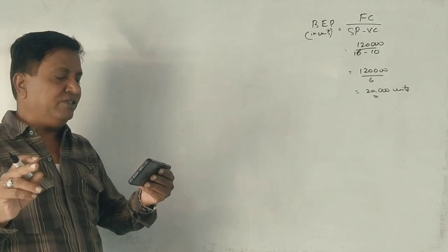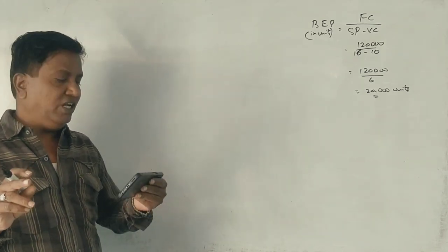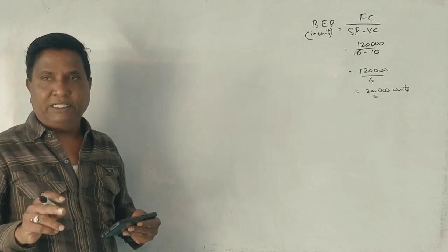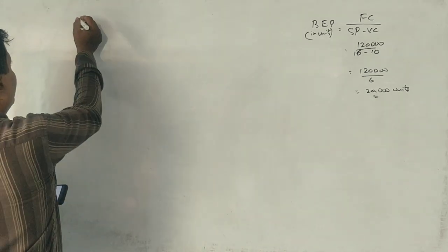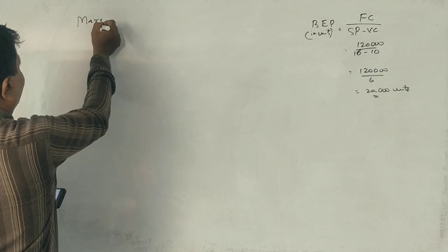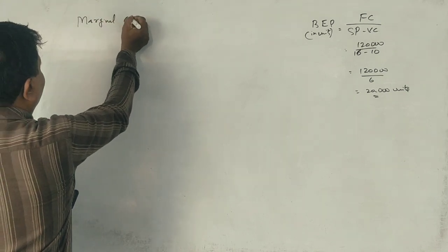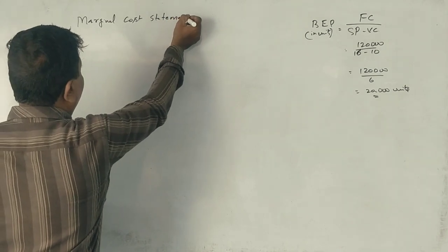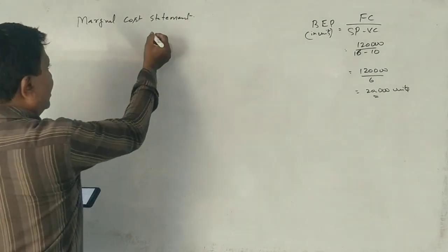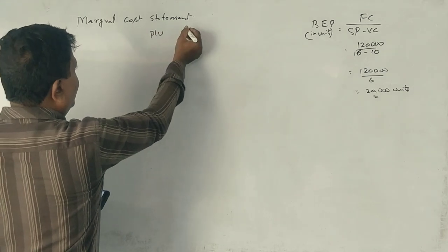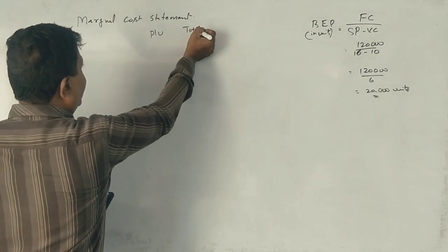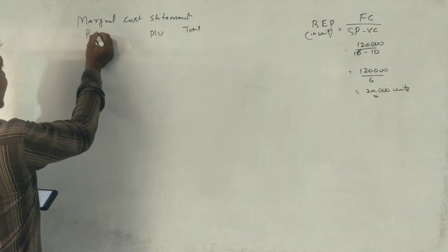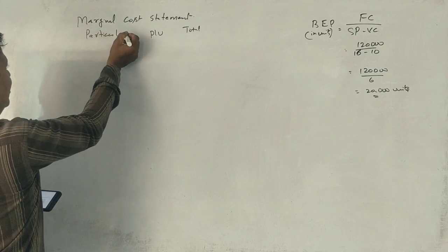Should have profit or losses for the year and also break-even points. Marginal cost statement. Everyone will note that Marginal Cost Statement. This is per unit, this is the total. This is particular.